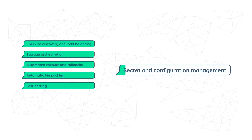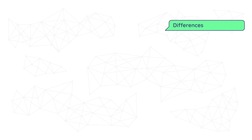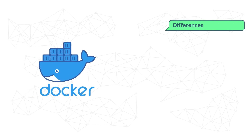Secret and configuration management: Kubernetes can be used as a safe place to store and manage sensitive information such as passwords and SSH keys. You can deploy and update secrets and application configurations without rebuilding your container images and without exposing the secrets in your stack configuration.